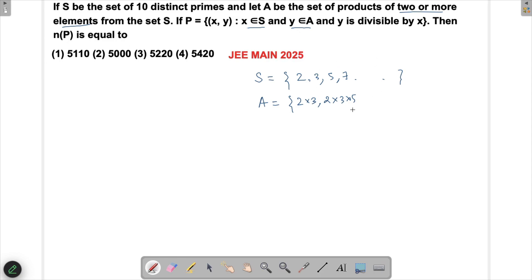If I'm trying to figure out how many elements would be there in A: once I choose one prime, say 2, how many options do I have? I can choose one element from the remaining 9, so the number would be 9C1, or I could choose two elements like 3 and 5, which is 9C2, and this will go up to 9C9.